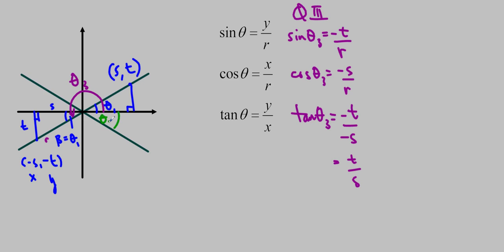And then we're going to do quadrant 4. So again, I'm using my theta 1 as my beta, as my related acute angle. I'm just dropping that perpendicular. This is going to be s, and this height is going to be t. So I get positive s, negative t as my coordinate there. And this length is going to be r.